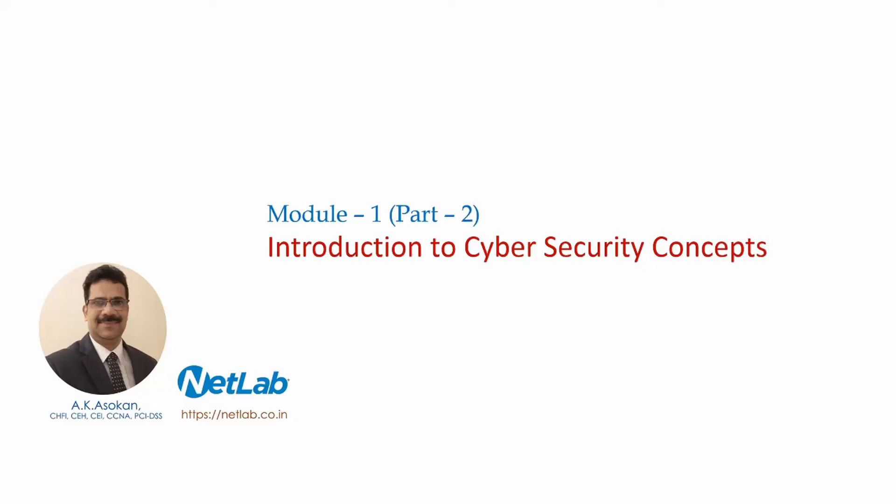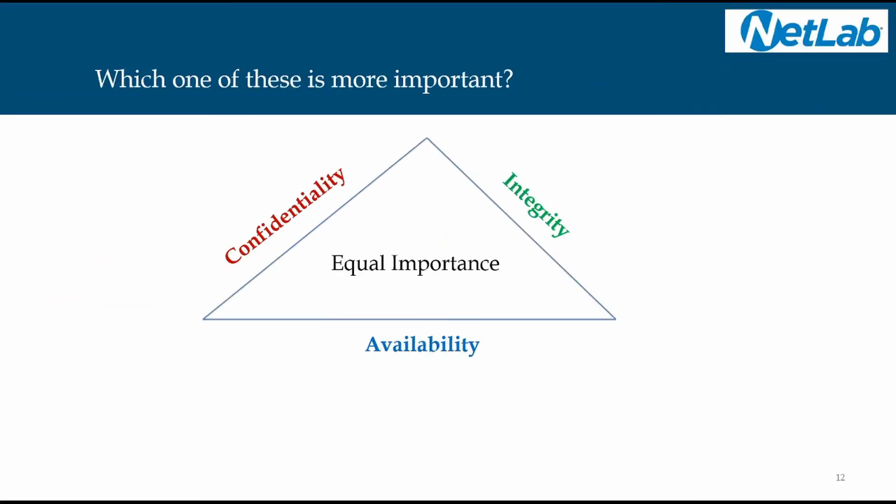Welcome to module 1 part 2. Which one of these is more important is the question. This is the CIA triad: confidentiality, integrity, and availability.